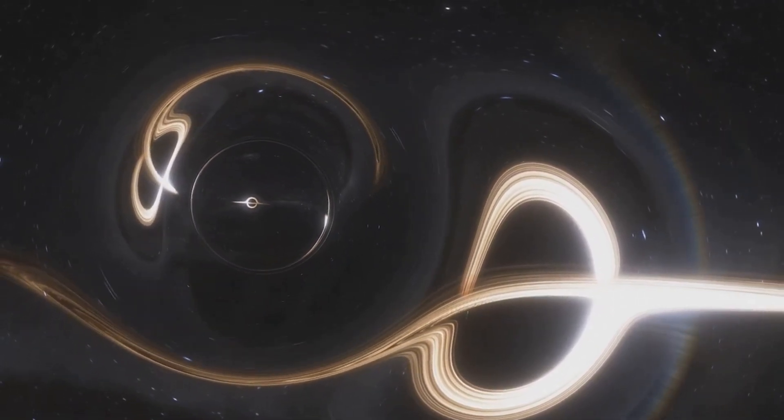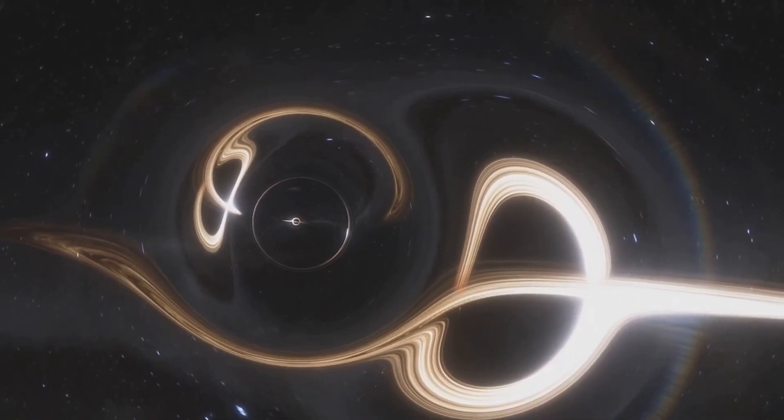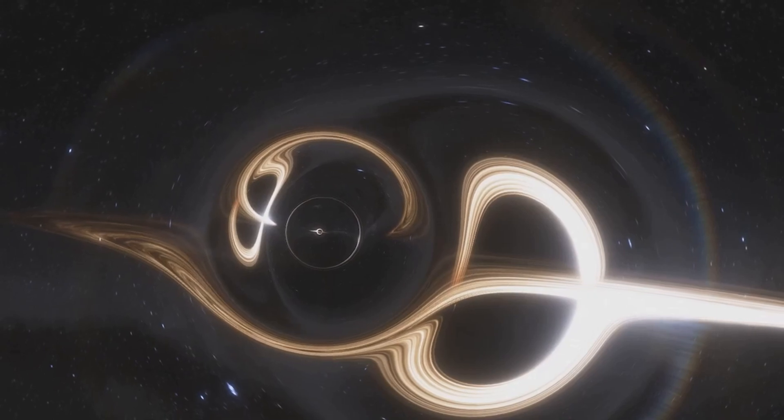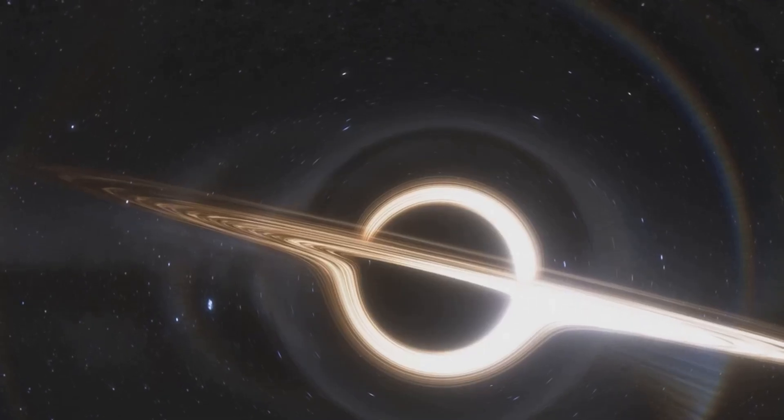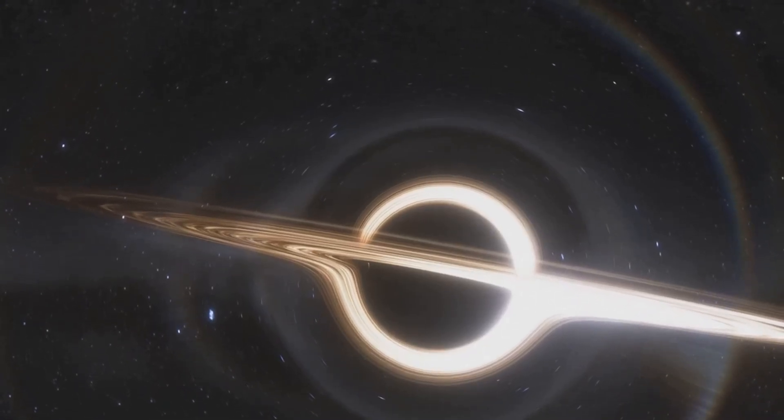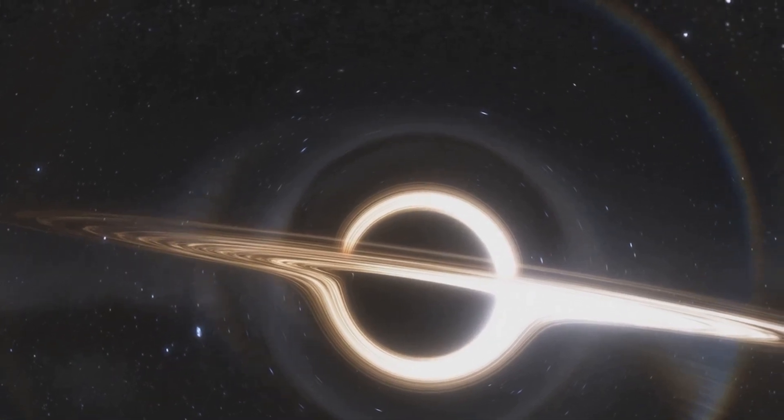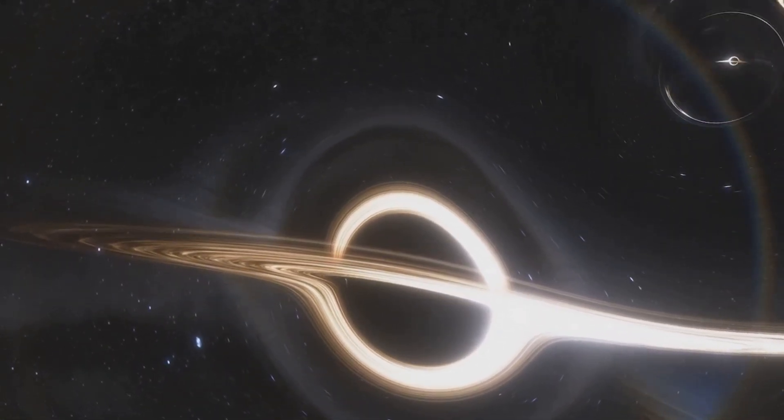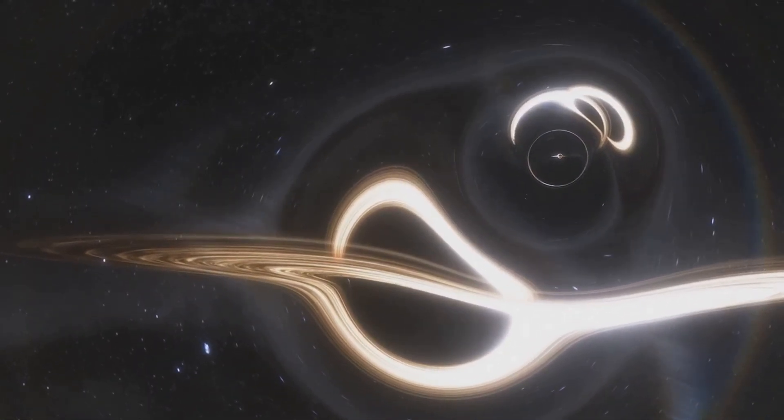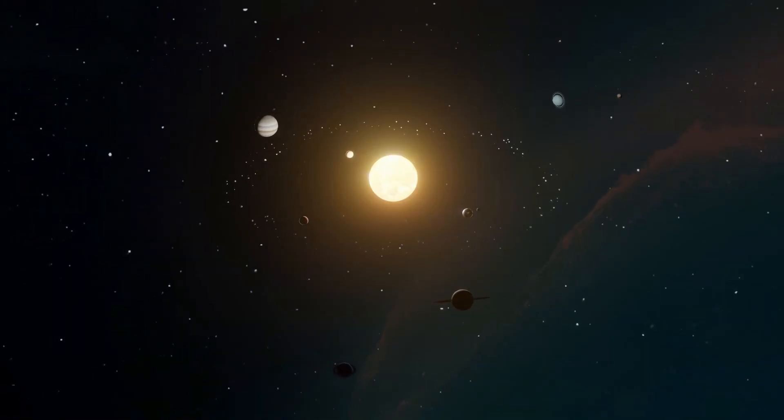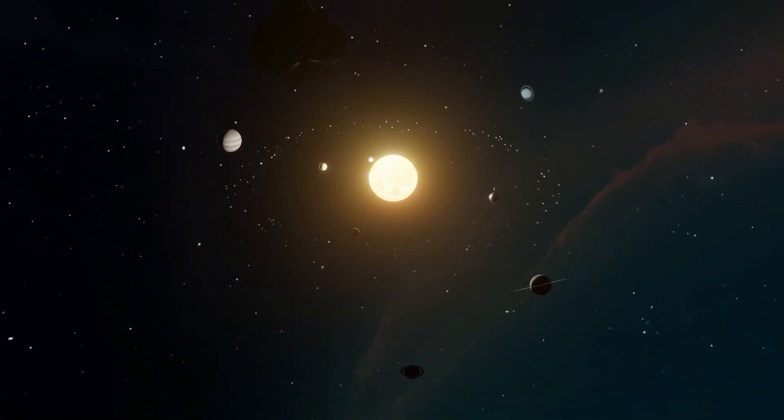But there's more to these images than meets the eye. Webb has also been observing an intriguing phenomenon known as gravitational lensing. This is where massive celestial bodies warp the fabric of space-time around them, causing light to follow curved paths. It's like a cosmic hall of mirrors, bending and distorting the light from distant galaxies.